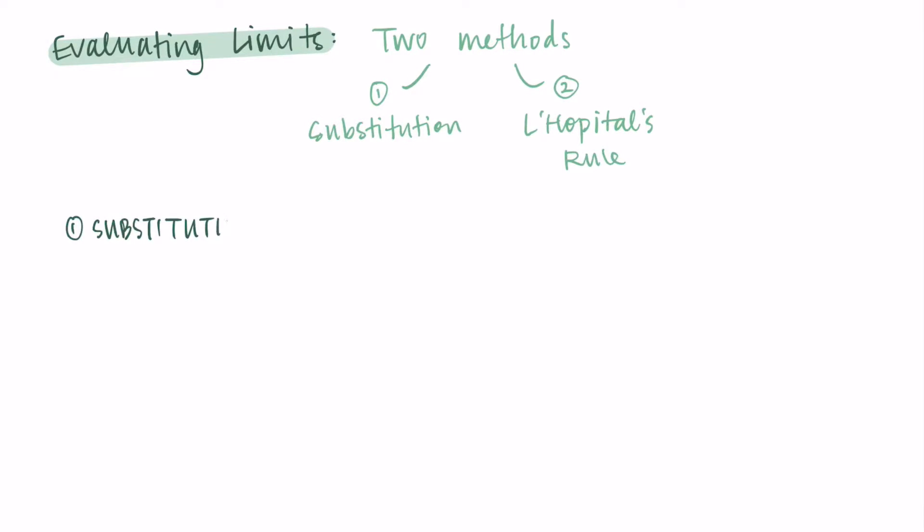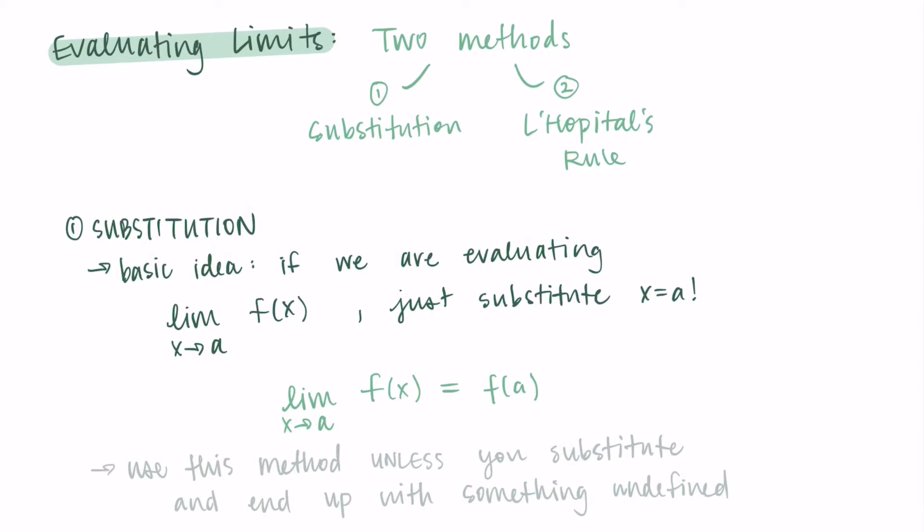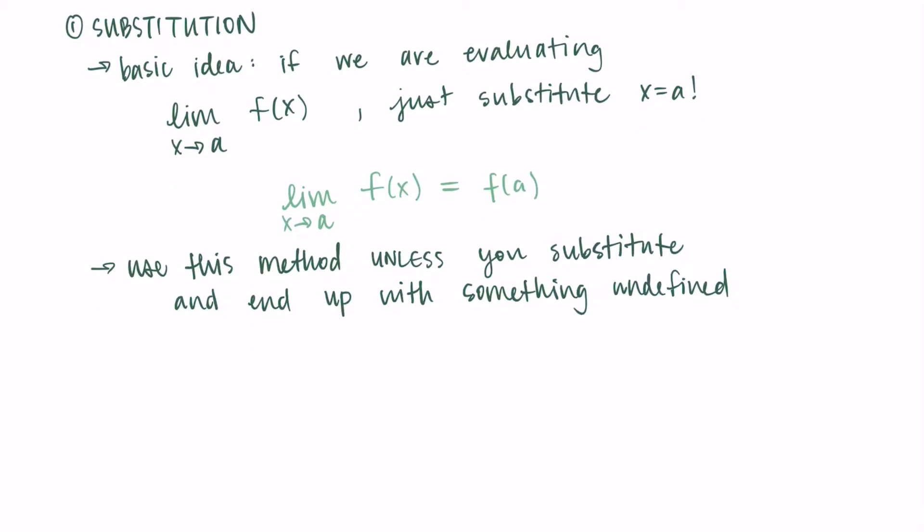When we use substitution, the basic idea is that if we have a limit that looks like the limit as x approaches a of some function f, all we do is just substitute in a for x. Everywhere we see an x in the function, we just replace it with a and see what we get. So the limit as x approaches a of f(x) is just equal to f(a). We plug in a for x. We use this method of substitution first, and then we need another method if it doesn't work.